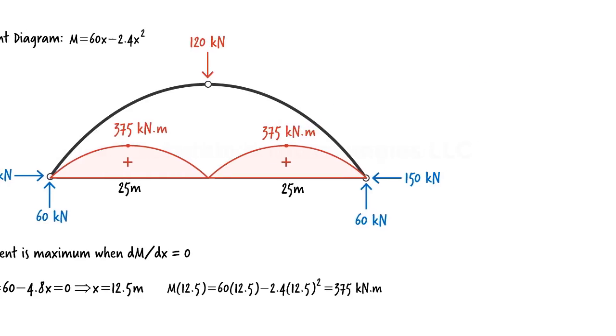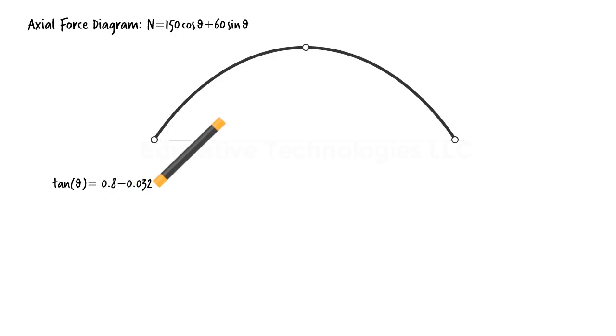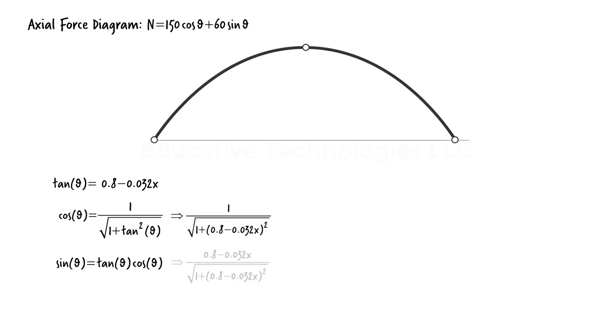To draw the diagram for the axial force, we are going to graph this equation. Using trigonometric properties, we can write cosine theta in terms of tangent theta this way, and sine theta can be expressed this way. Then the algebraic expressions for the cosine and sine of theta become. Substituting these expressions in the equation for n, we get.